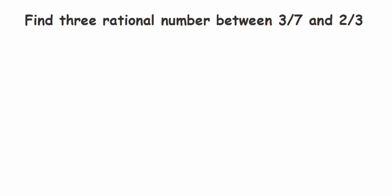Hey everyone, so here's a question from rational numbers. The question is: find three rational numbers between 3/7 and 2/3. Now the very first thing we have to do here is check if denominators are same or not.